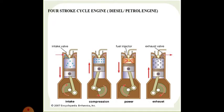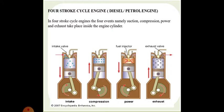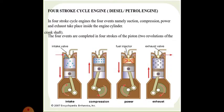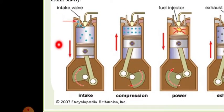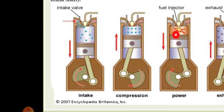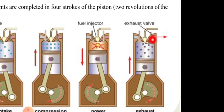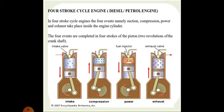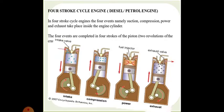In the four-stroke engine, the four events — suction, compression, power, and exhaust — take place inside the cylinder, completed in four strokes of the piston, that is two revolutions of the crankshaft. During intake, fuel is taken to the combustion chamber; then it is compressed at very high pressure; then there is ignition producing the power stroke; then the exhaust valve expels the waste air-fuel mixture. Then suction takes place again.